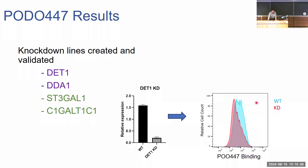Here's a snapshot of some of the results. For the DET1 knockdown line, we see a drastic decrease in DET1 expression after performing qPCR, as well as a shift in POTO447 binding that aligns with our initial screen. Other knockdown lines with a strong effect included DET1 and DDA1, which are both involved in the E3 ligase complex, as well as ST3-GAL1 and C1GALTC1, which are involved in forming the aberrantly glycosylated form that POTO447 recognizes.